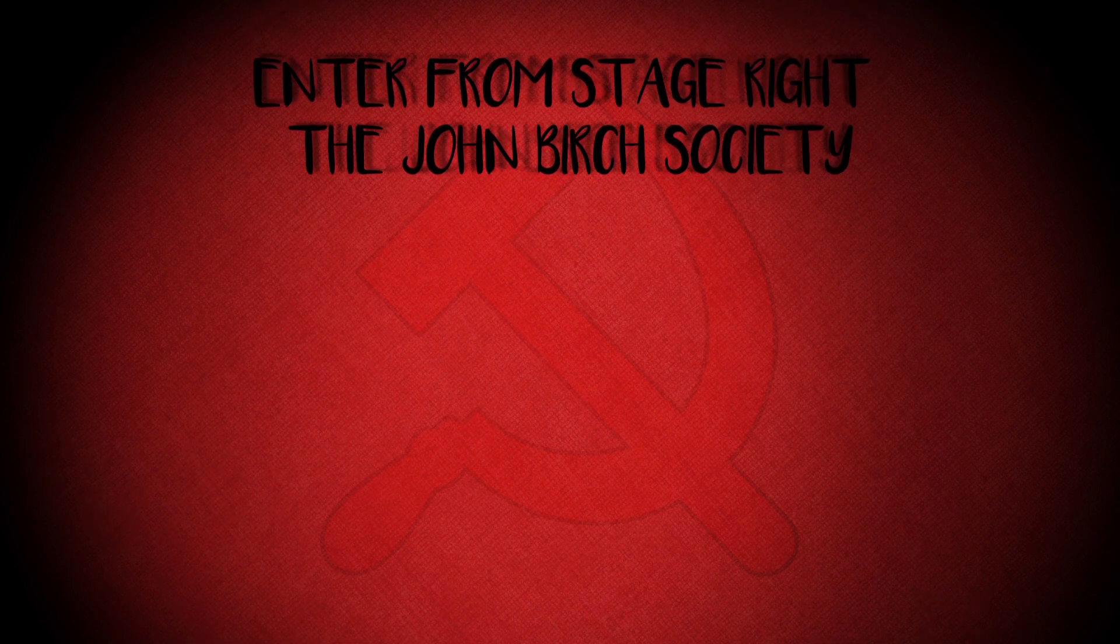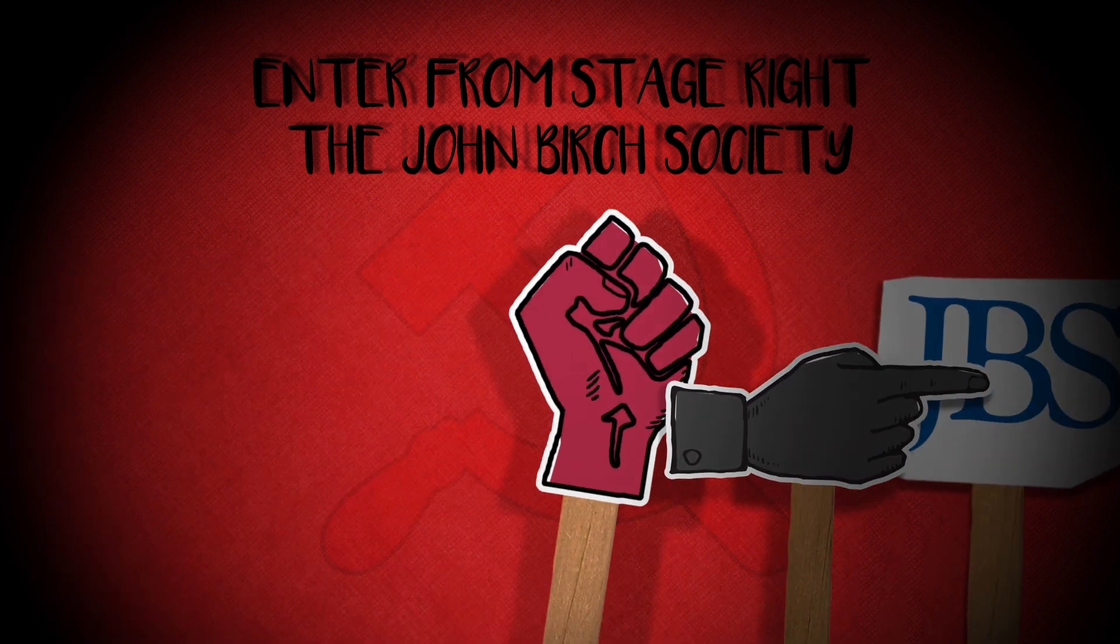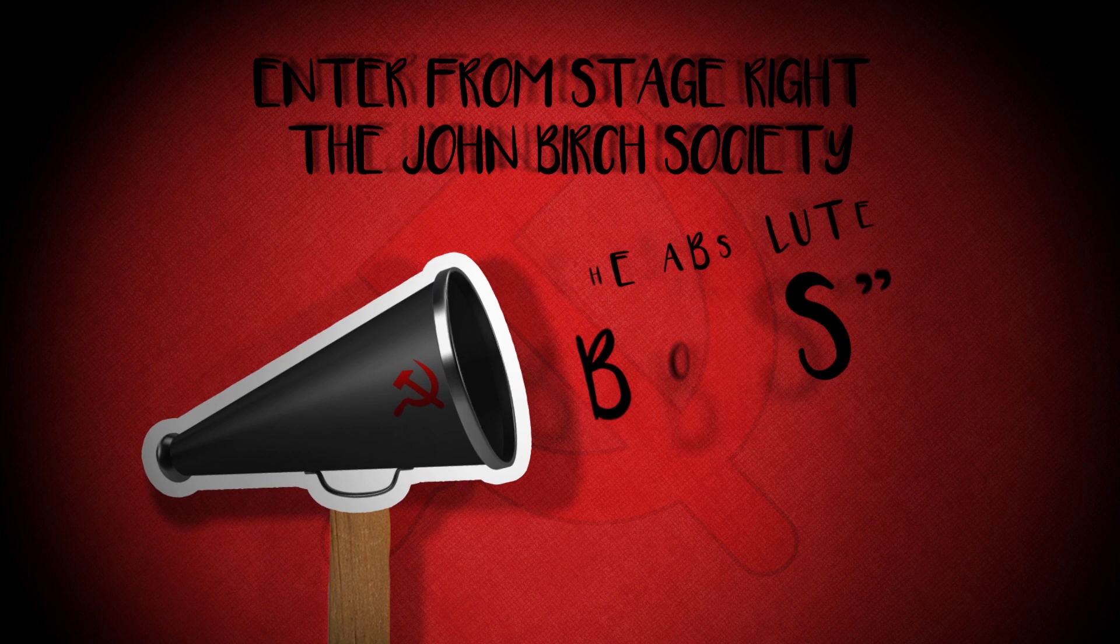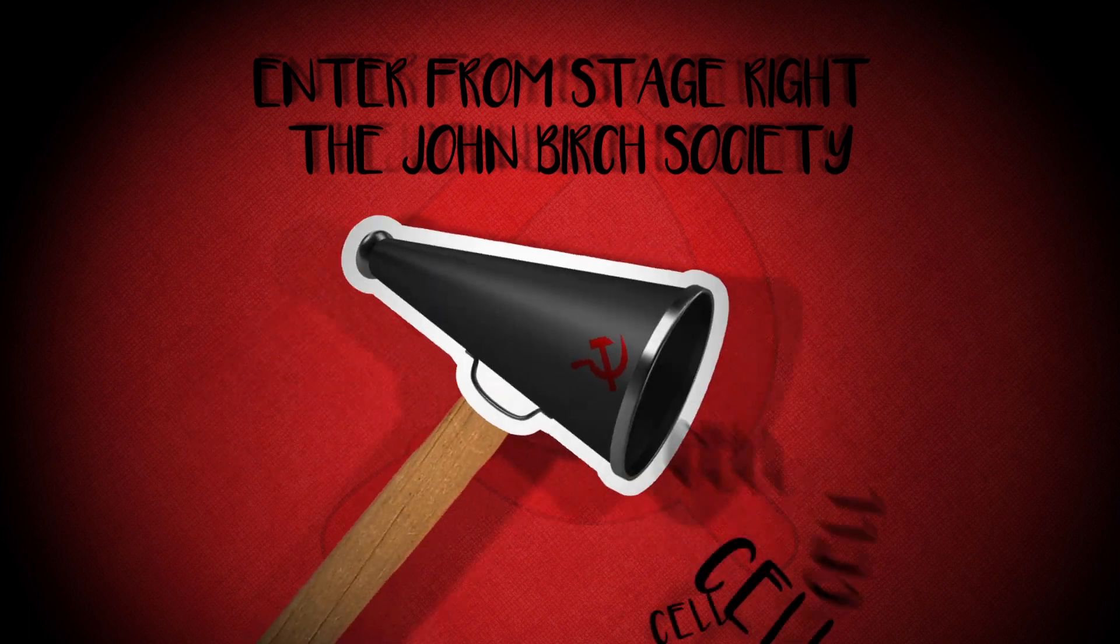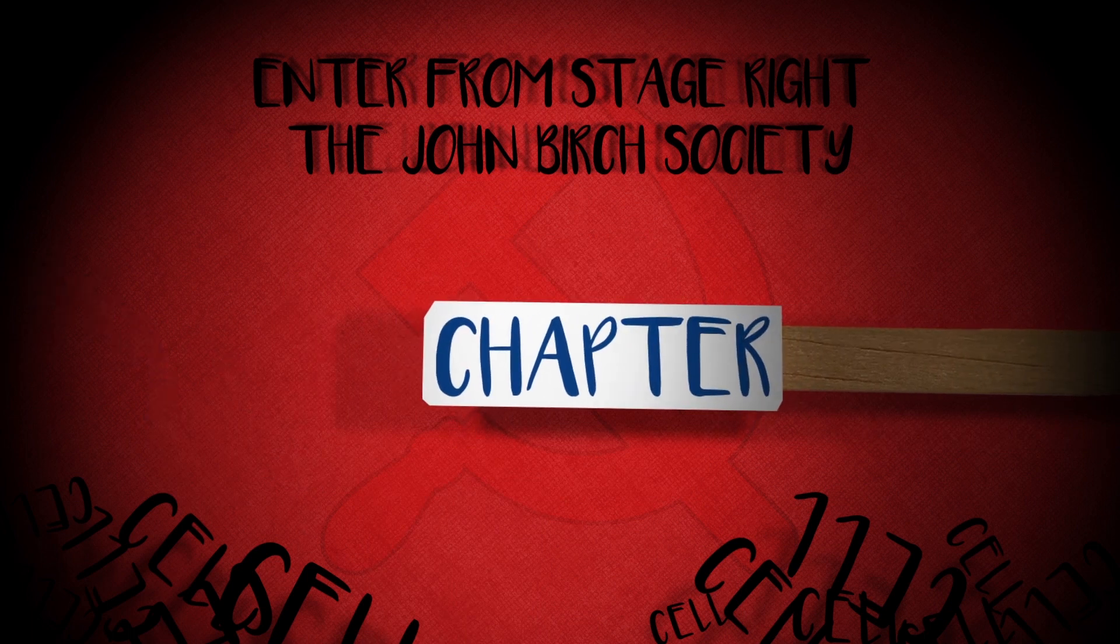Of course, not all of that attention was positive. In 1961, the Communist Party's West Coast newspaper, People's World, put out an article entitled, Enter from Stage Right, the John Birch Society. Naturally, the communists portrayed the anti-communist John Birch Society as a dangerous organization created by the absolute boss, Welch, who was busily employing the cell method to create a following across the nation. They deliberately misled their readers by using the communist term, cell, instead of the actual term, chapter, which is what the society calls a group of local members. People's World even attacked Mr. Welch's critical view of democracy.